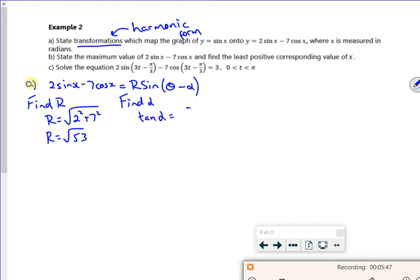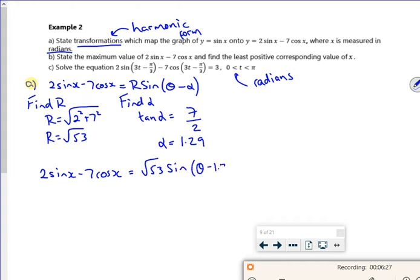So that's giving me a root 53. And then to find alpha, I'll do second number over first number. But if you look, I've ignored the minus. And I've mentioned that before about ignoring the minus. So just be careful, this is radians. So it's the same measure in radians there. So that's in radians. So it gives us 1.29. So my 2 sin x minus 7 cos x is actually root 53 sin theta minus 1.29.